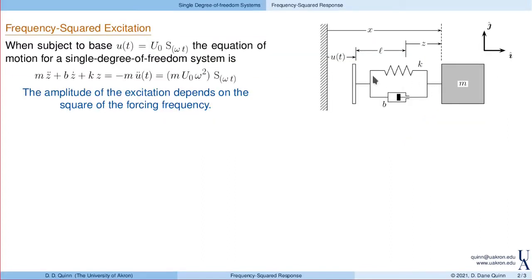In our last lecture, we derived the equation of motion for this system, where we have a base that moves with displacement u of t, which we assume to be harmonic with amplitude u-naught and frequency omega. To that base is attached a spring mass damper system with stiffness k, damping coefficient b, and mass m. Because the displacement of the block, measured by x, is distinct from the stretch across the spring and damper, measured by z, and those two are related with the motion of the base, that introduces frequency squared excitation.